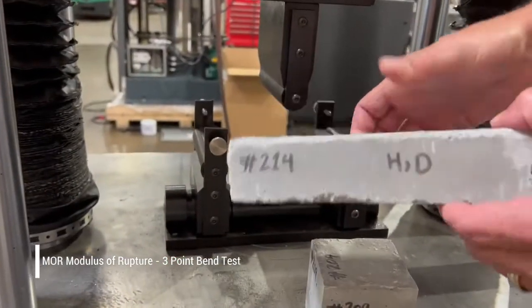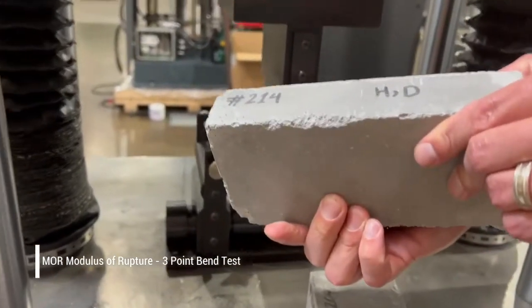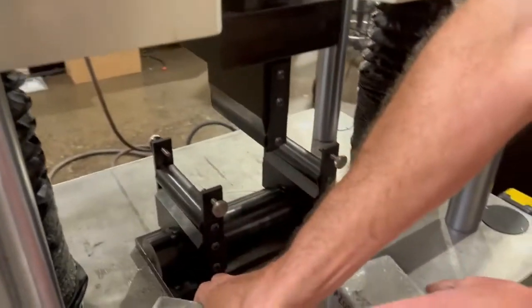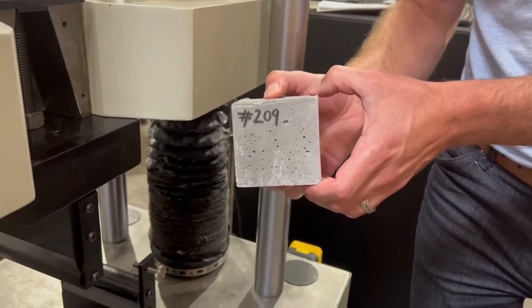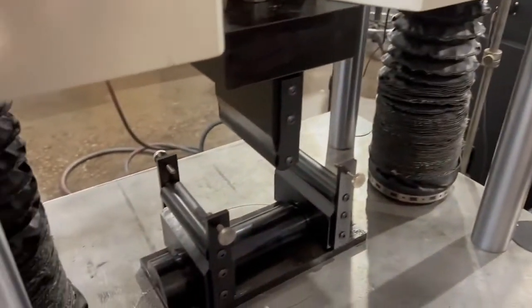This is a standard MOR brick that we're going to be testing, and this is your standard brick for your compression, which is the cold crush strength of this material.